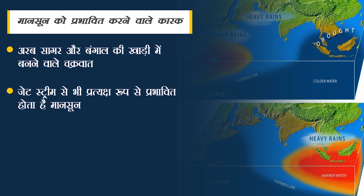अरब सागर और बंगाल की खाड़ी में बनने वाले चक्रवात भी मानसून को प्रभावित करते हैं। चक्रवातों के केंद्र में अति निम्न दाब की स्थिति पाई जाती है, जिसकी वजह से इसके आसपास की पवनें अत्यंत तेज गति से केंद्र की ओर बहती हैं। जब ऐसी परिस्थितियां सतह के नजदीक बनती हैं तो मानसून को सकारात्मक रूप से प्रभावित करती हैं। अरब सागर में बनने वाले चक्रवात बंगाल की खाड़ी के चक्रवातों के मुकाबले ज्यादा असरदार होते हैं क्योंकि भारतीय मानसून का प्रवेश अरब सागर की तरफ से होता है। जेट स्ट्रीम भी मानसून को प्रत्यक्ष रूप से प्रभावित करती है।